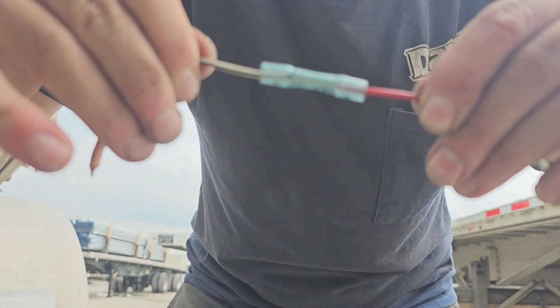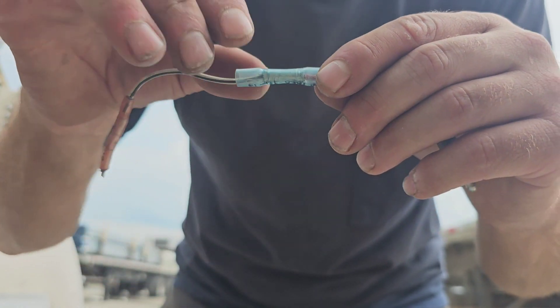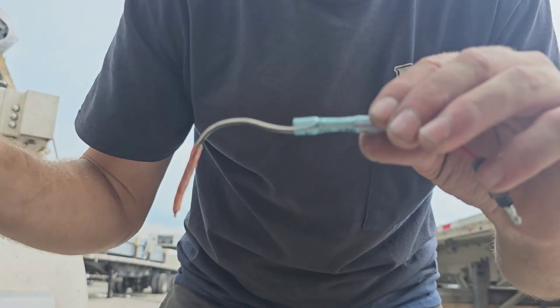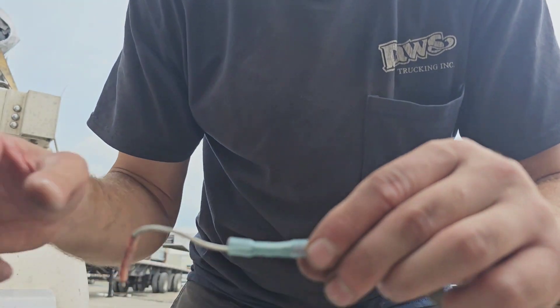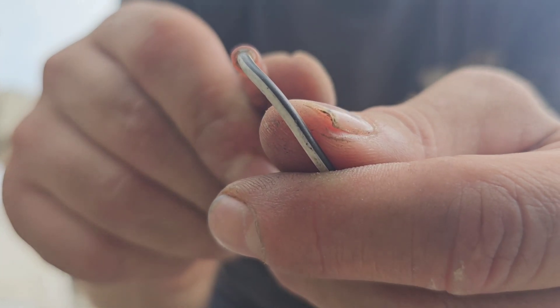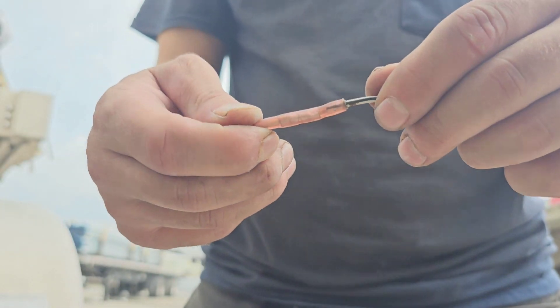Then you're going to take a lighter and light it on both these sides because these are heat shrinks. I don't have a lighter with me right now, but that's going to actually insulate the rest of the wire and keep moisture from getting into that connection, shorting out, and corroding.